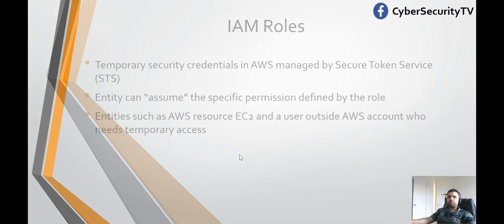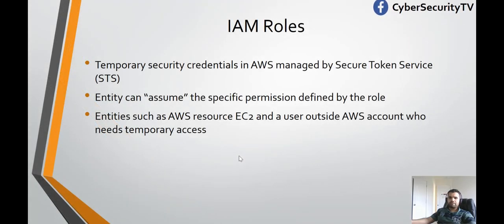IAM roles are temporary security credentials in AWS managed by the Secure Token Service, or STS. STS is a service which provides temporary security credentials which are considered as roles. An entity can assume the specific permissions defined by the role. That entity could be EC2, S3, or Lambda. Any user account which needs temporary access can use IAM roles to get access, and STS manages that particular access.